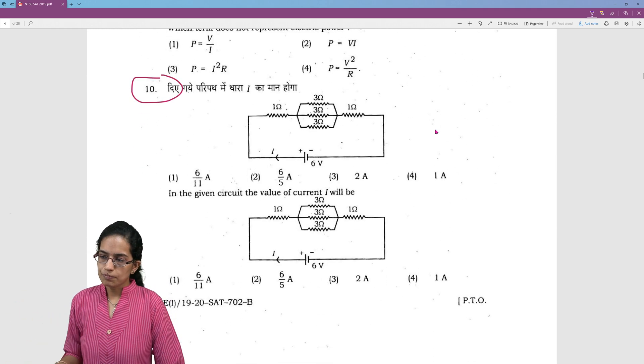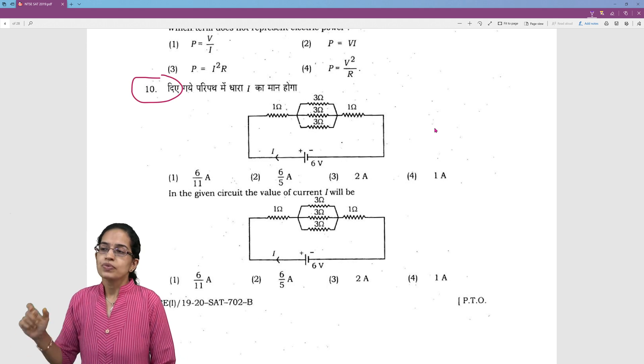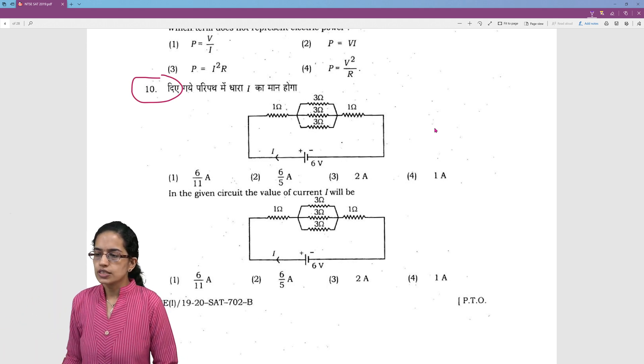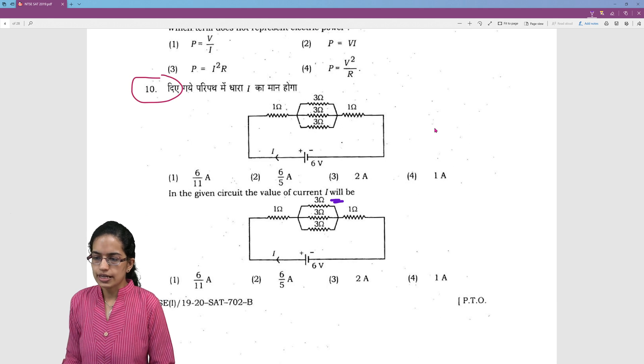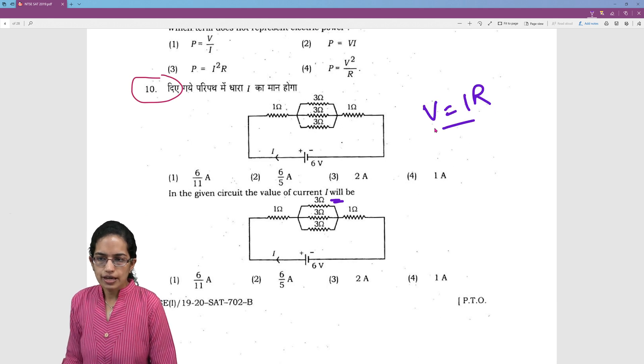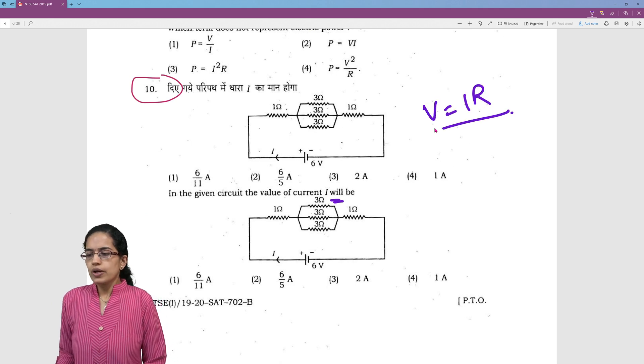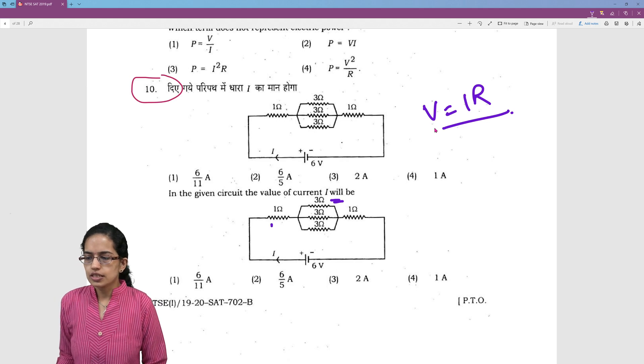Optics become an important section. The next is the question on voltage. Now we have to find out the current. So V is equal to IR. We already know that. Now in this case what is the resistance? It is 1.